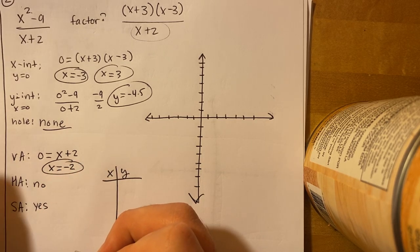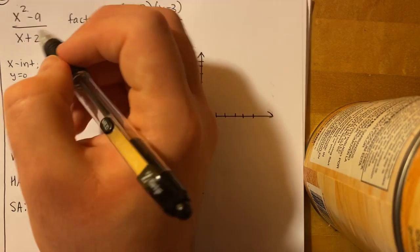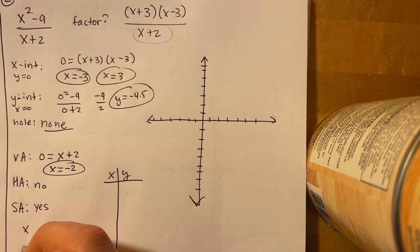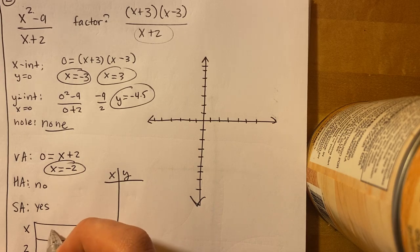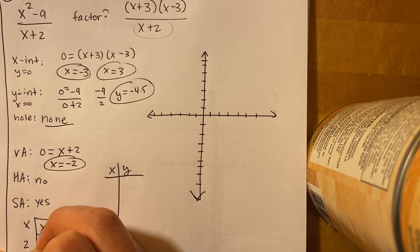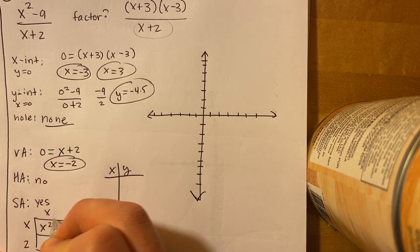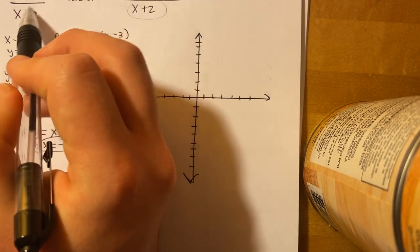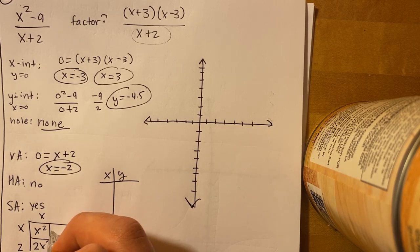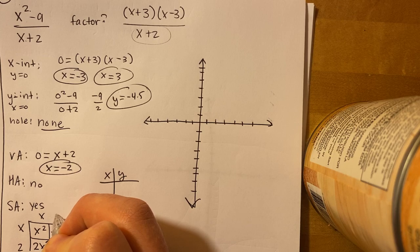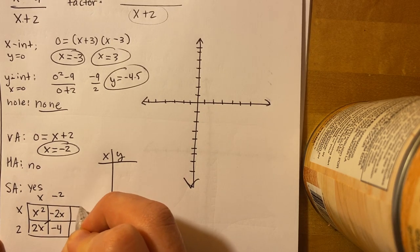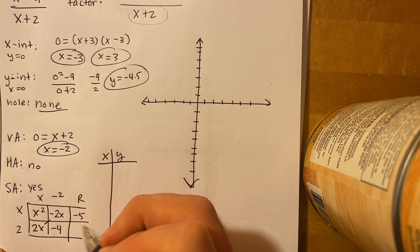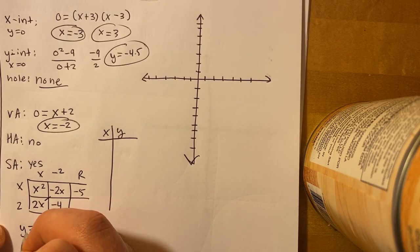To find the slant asymptote, we do polynomial long division: divide x² − 9 by (x + 2) using box division. Setting it up: x times x gives x², and x times 2 gives 2x. Since there's no x term in x² − 9, we use negative 2x to cancel it. Negative 2 times 2 gives negative 4, with a remainder of 5. Remainders don't matter for slant asymptotes, so our slant asymptote is y equals x minus 2.